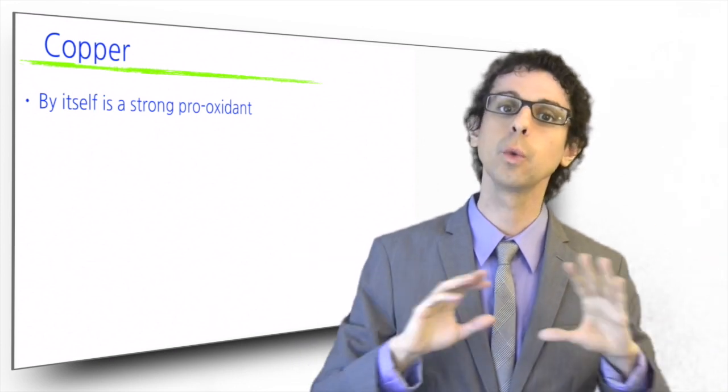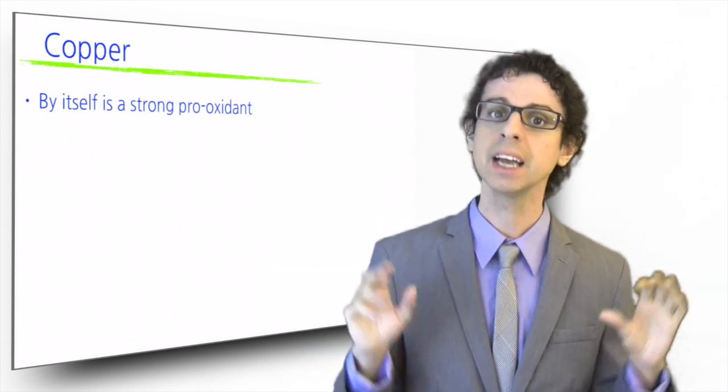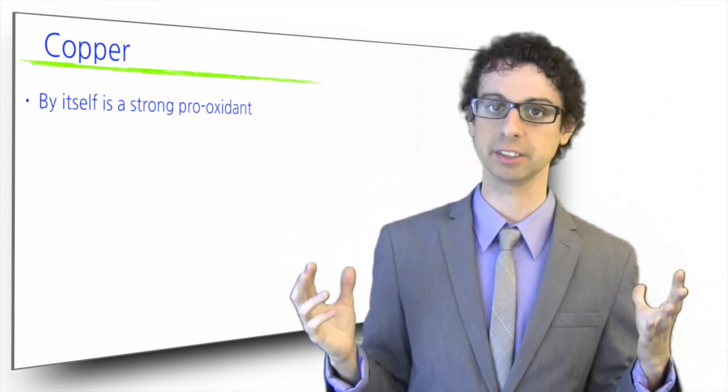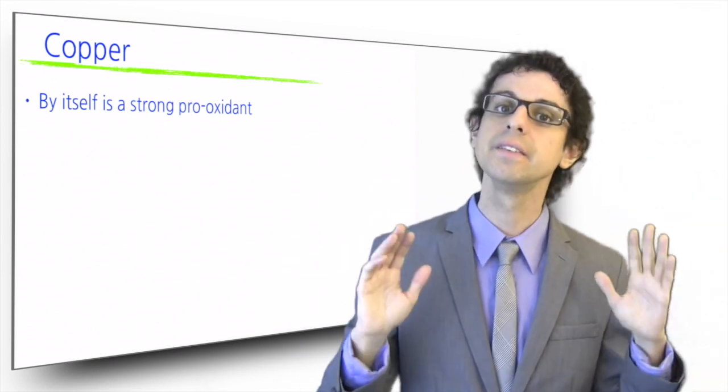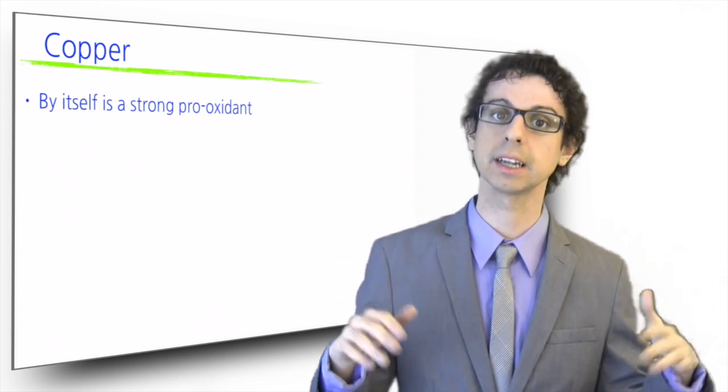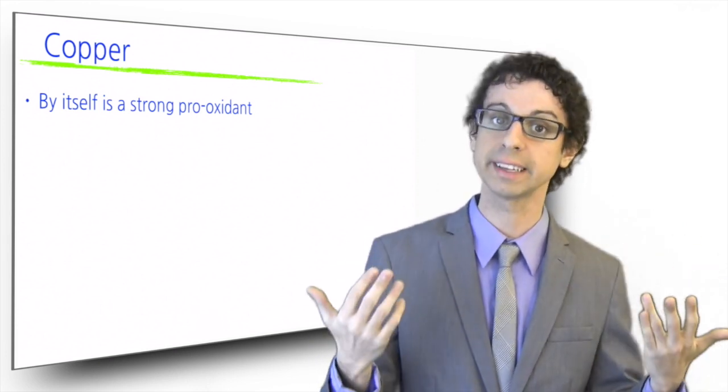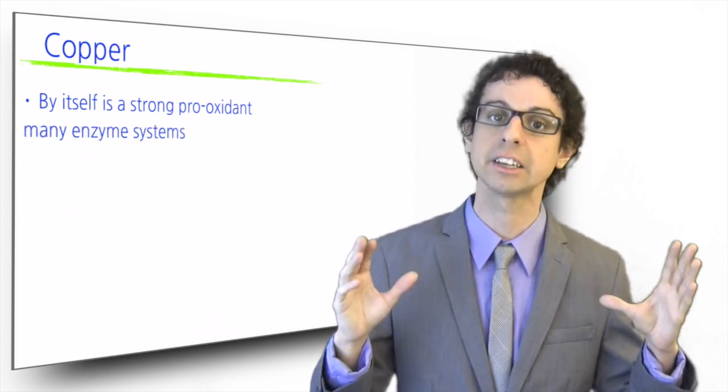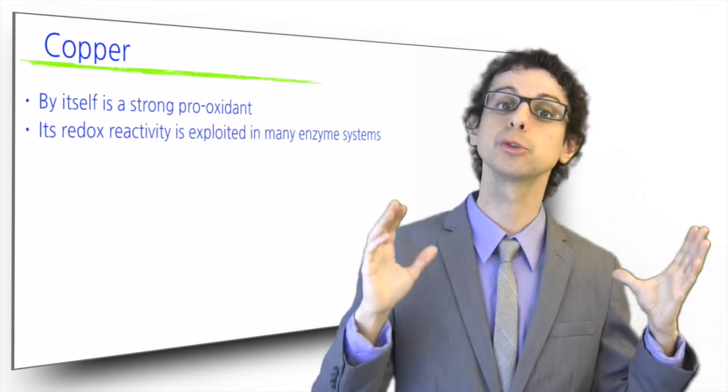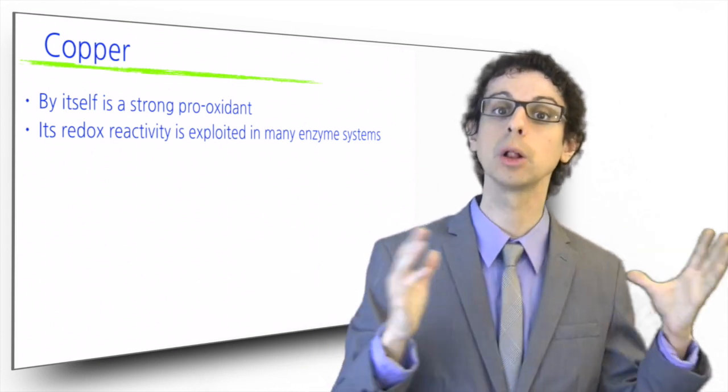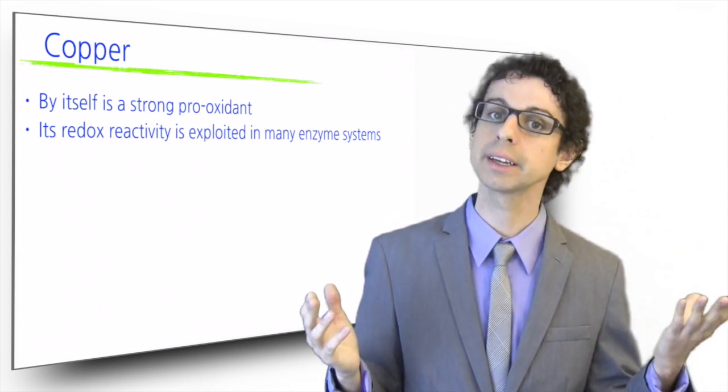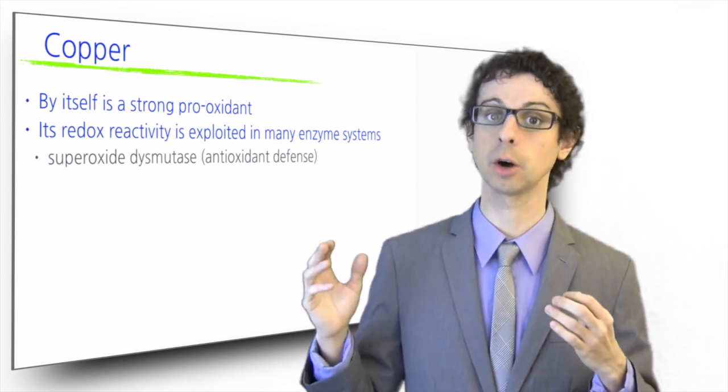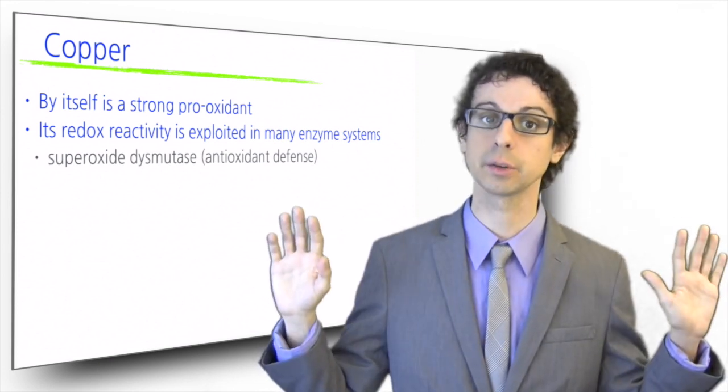This is why you won't normally find free copper in your body. It is always bound to something to tame its high reactivity. On the other hand, the very same redox reactivity that makes copper potentially very dangerous if uncontrolled or in excess also makes it essential in biological systems to transfer electrons from one molecule to the other. Ironically, too little copper can have a pro-oxidant effect just as much as excess copper, although in a completely different way.